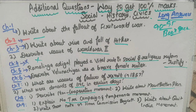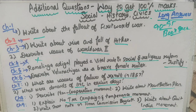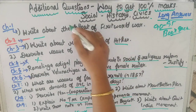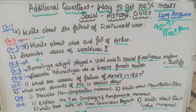Chapter 9: explain the no-tax campaign and temperance movement. Write a short note on the Simon Commission boycott. Third question: write about the Quit India Movement. So this covers the history long questions and additional questions.